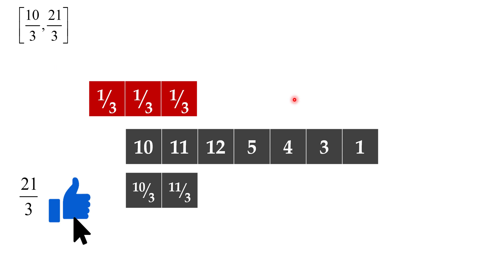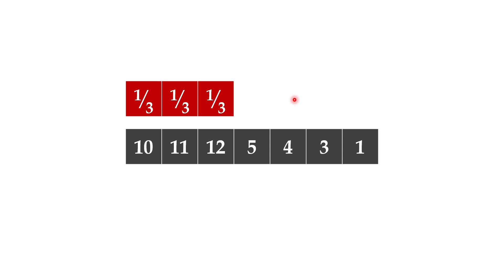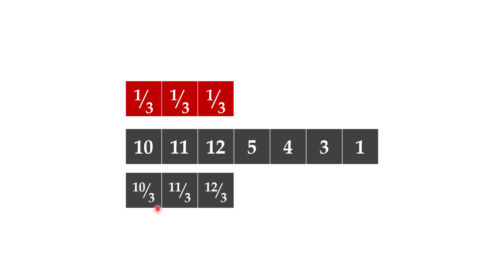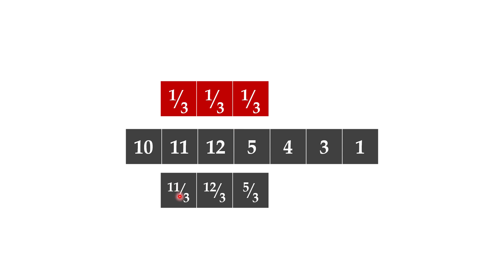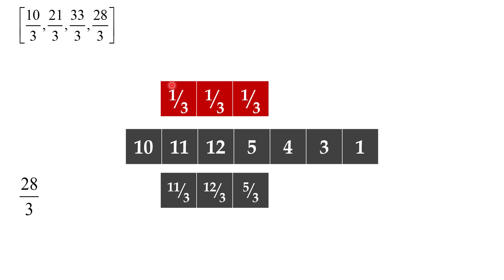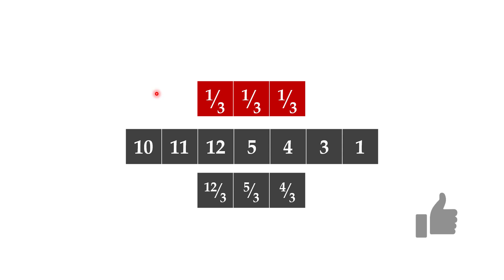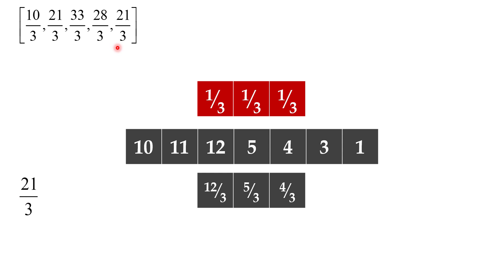Let's again slide this vector one block to the right. Now we can multiply each value: 10 divided by three, 11 divided by three, 12 divided by three. If you sum these values, you get 33 divided by three, and we append that to the list. Sliding again to the right, we multiply 11 divided by three, 12 divided by three, and 5 divided by three. The sum is 28 divided by three, and we append that to the list as well.